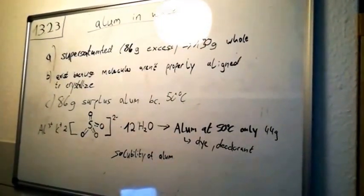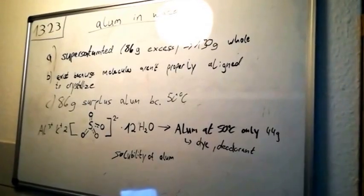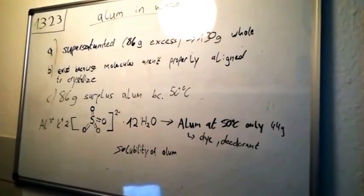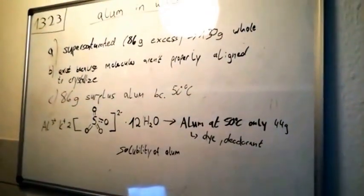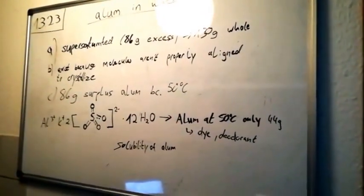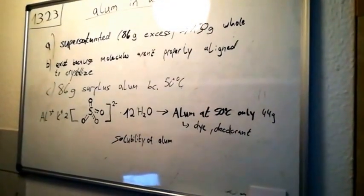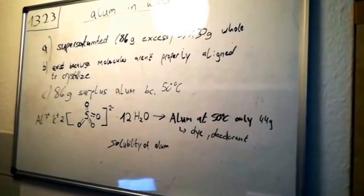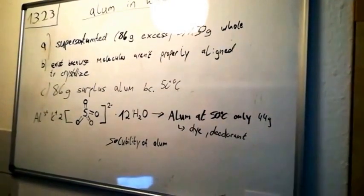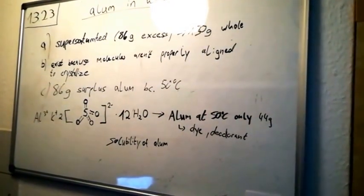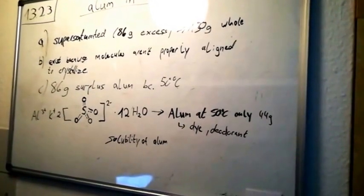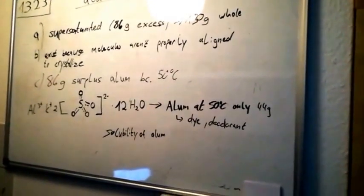When the solution is slowly cooled to 50 degrees, is the solution unsaturated, saturated, or supersaturated? My answer, and the correct answer, is supersaturated because at 50 degrees it can only contain 44 grams per 100 grams of water, so there is 86 grams of excess alum in that solution.